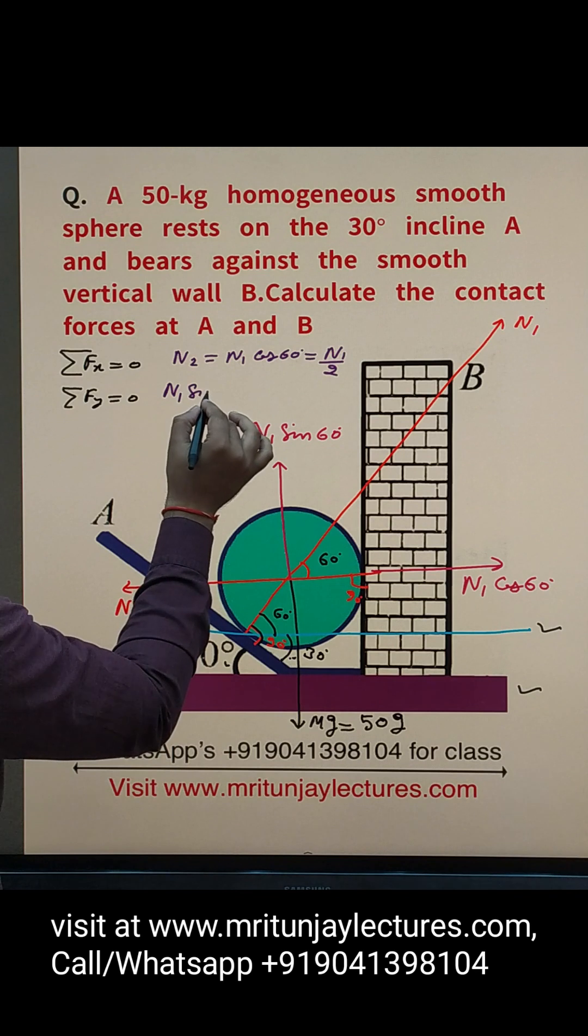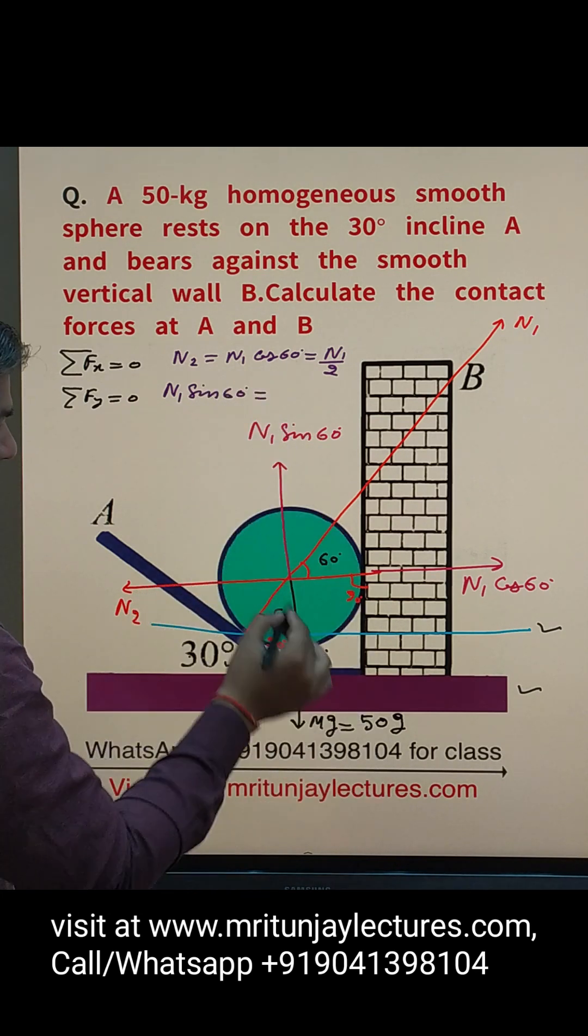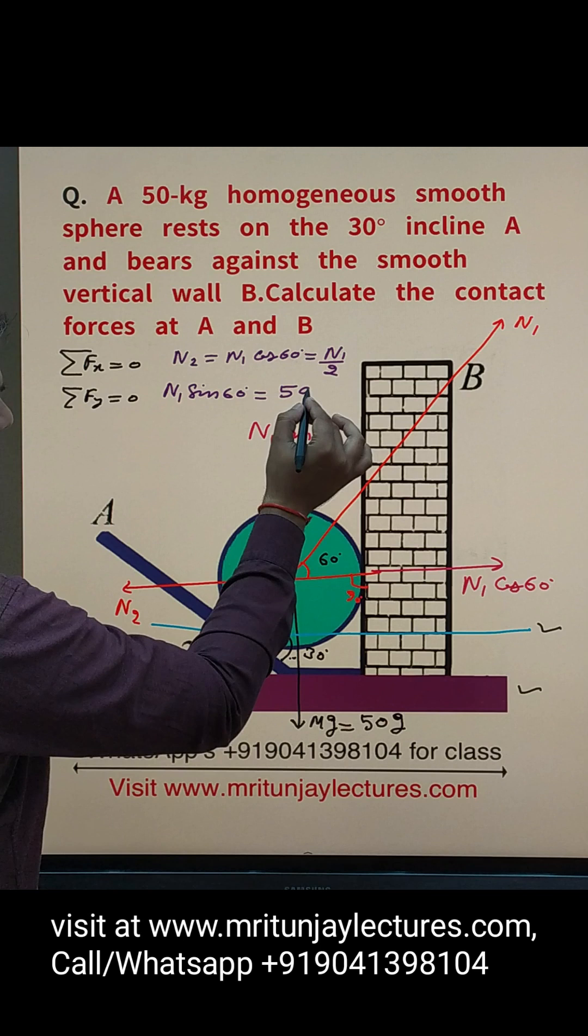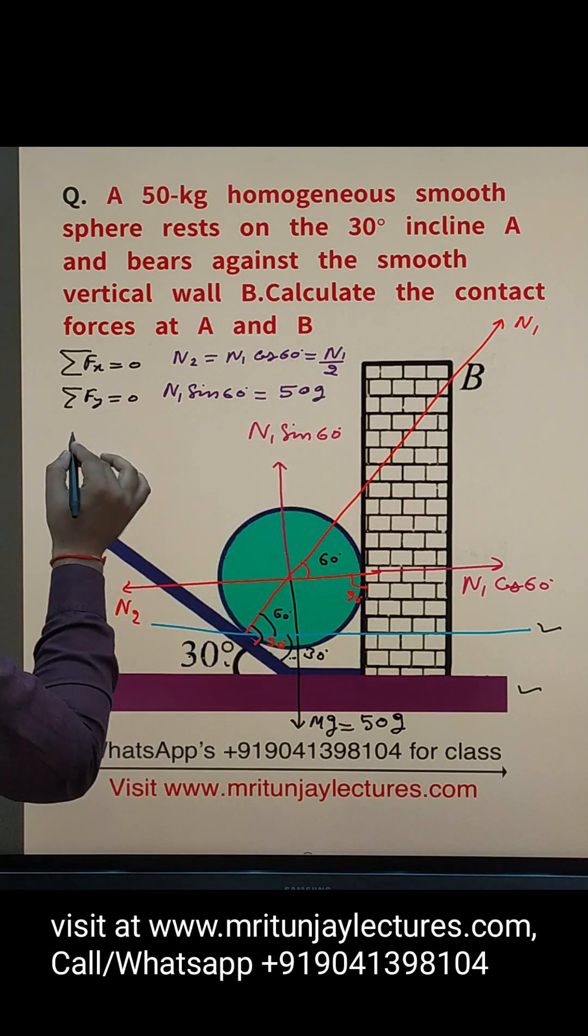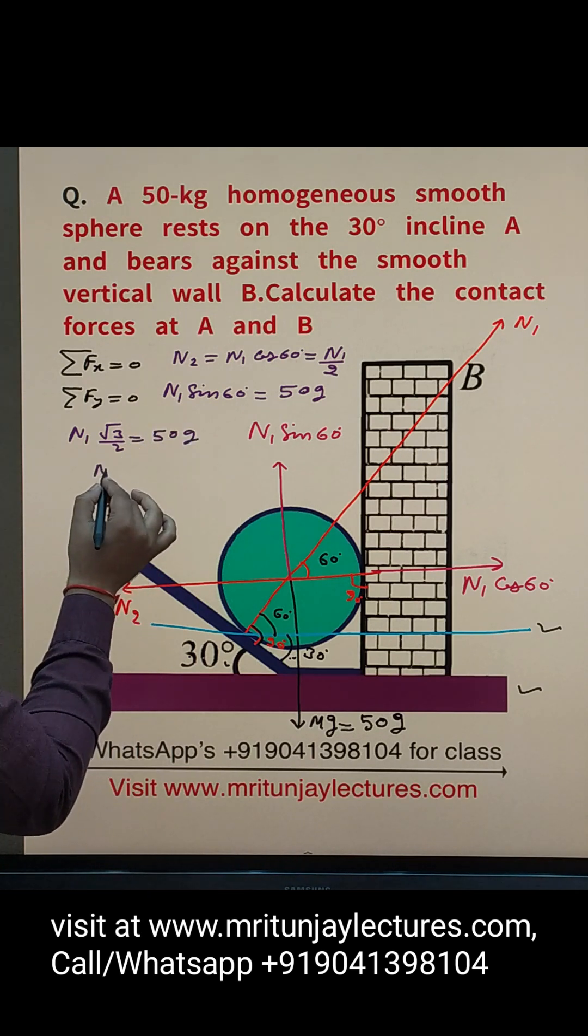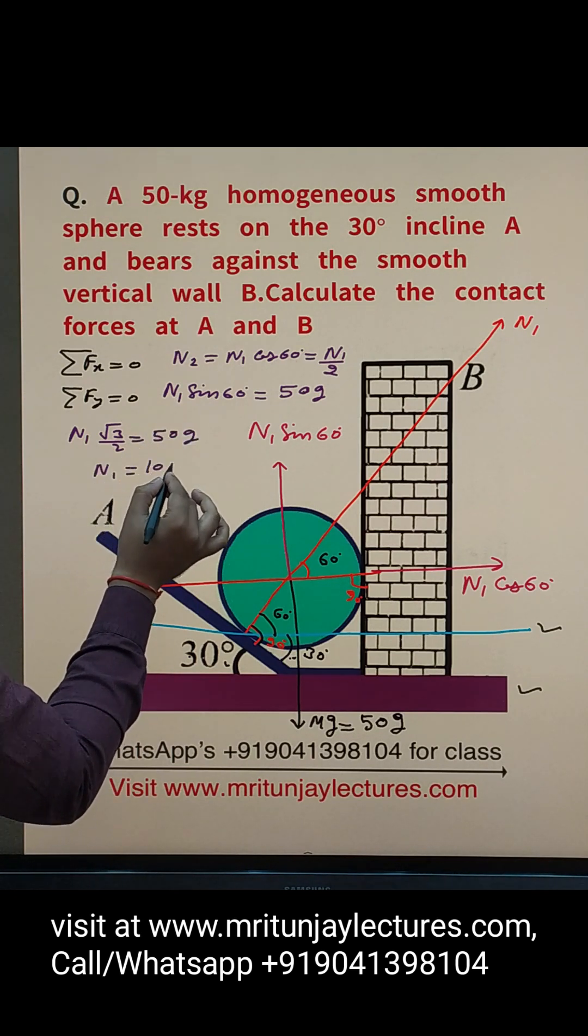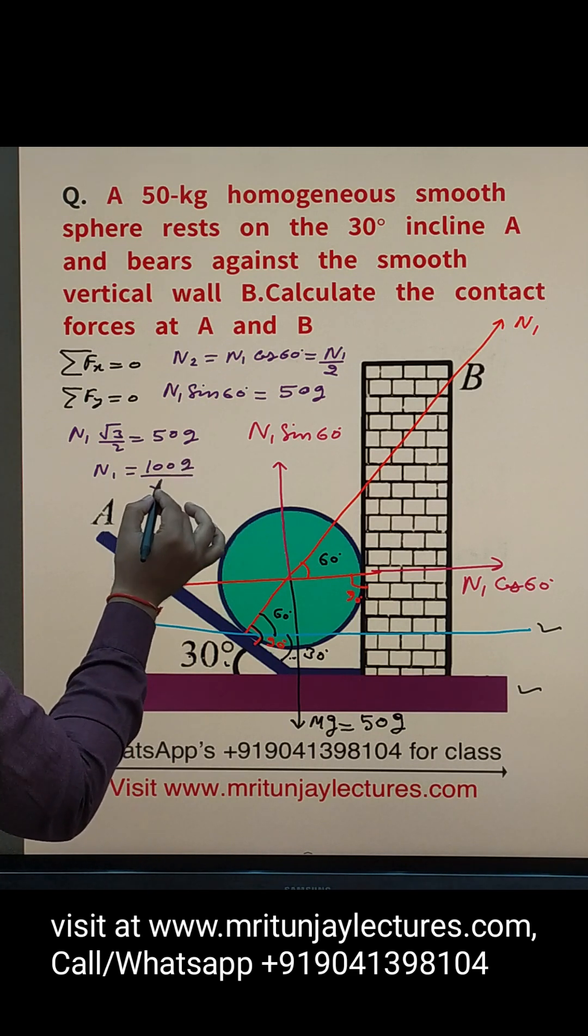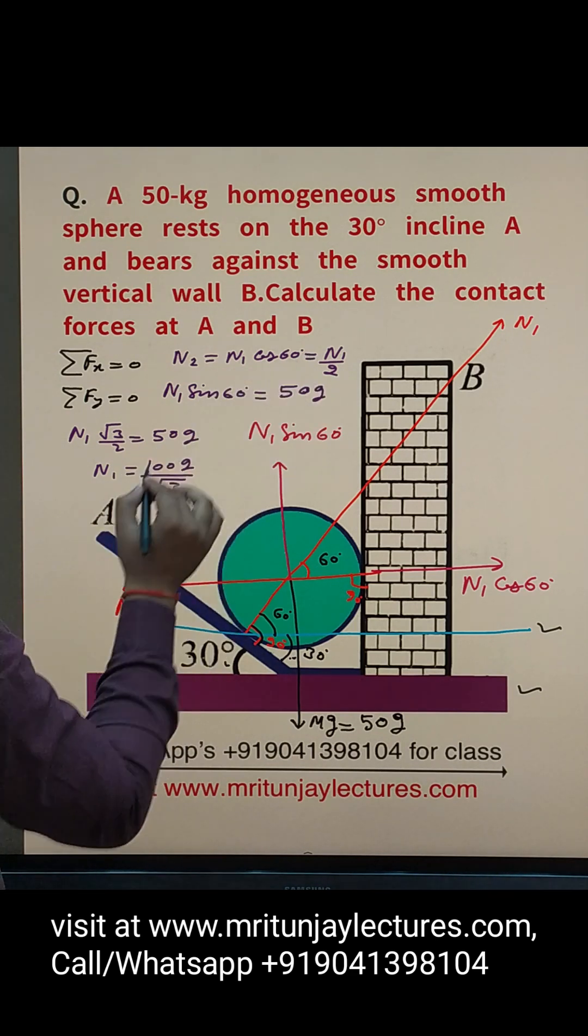Now N1 sin 60, this is equal to mg, this is equal to 50g. And that one, N1 into root 3 by 2, this is equal to 50g. So N1 is how much? 100g divided by root 3.